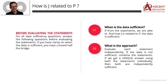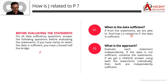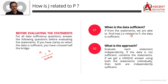When is the data sufficient for 'How is J related to P'? The process is: first evaluate Statement A alone, then evaluate Statement B alone, and finally combine both and evaluate. In this process, if we find that A alone is sufficient and so is B alone, we go with answer option 4.